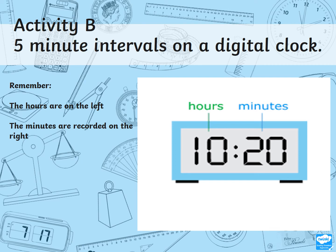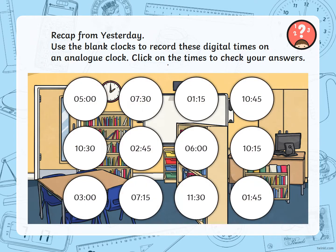Hi Year 2, this is Activity B. We're going to be looking at five-minute intervals on a digital clock. Remember, on the left are the hours and on the right are the minutes. What I'd like you to do is use the blank clocks that I've sent you to record these digital times on an analogue clock. Pause the video and then you can click on the times to check your answers.